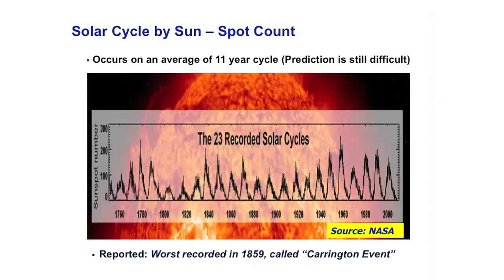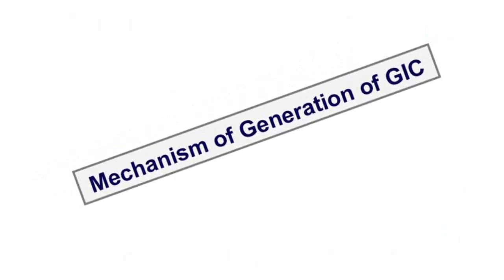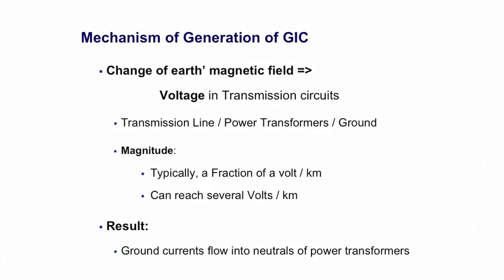How is the geomagnetically induced current generated? The change of the magnetic field of the earth links the transmission lines with the transformer and the ground — you have a one-turn circuit. Any time you have a magnetic field going through a closed turn, you induce a voltage. That voltage divided by the very low resistance of the transmission line and the ground produces those very high currents we call geomagnetically induced currents, which go into the neutral of the transformers.